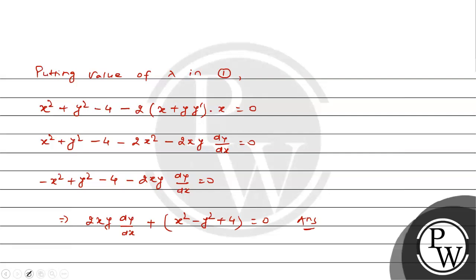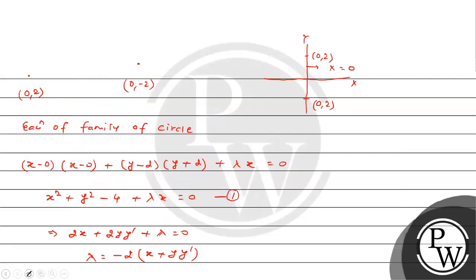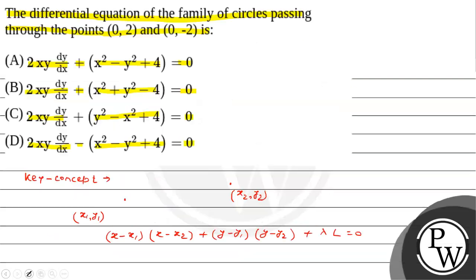And let us see the solution: 2xy(dy/dx). Thus, the final answer of the given question is option A: 2xy(dy/dx) + x² - y² + 4 = 0. Hope you understood it well. Best of luck.